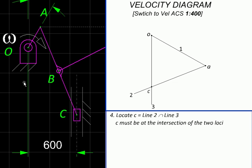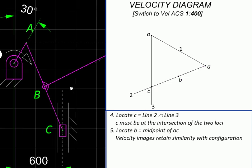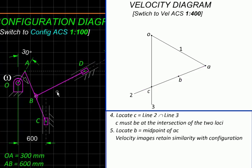The velocity image of B will be situated on this line AC in the same ratio as this AC. So we can divide it in that same proportion, in the same ratio, and get the image of B.